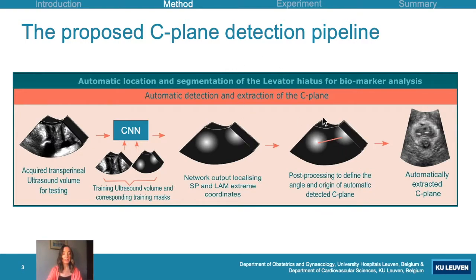We then sample our 2D plane at the midpoint between the symphysis pubis and the levator ani muscle, and from this we obtain our 2D C-plane extracted from the 3D volume.